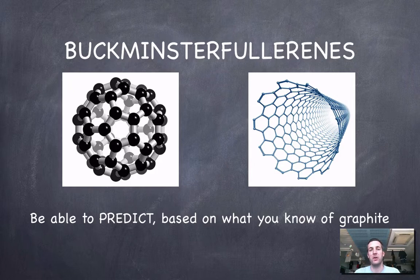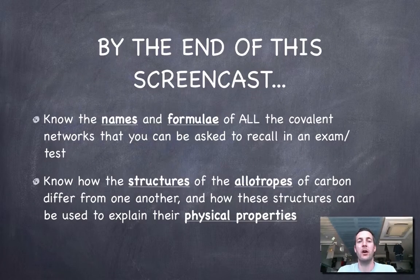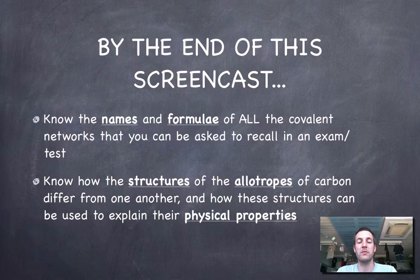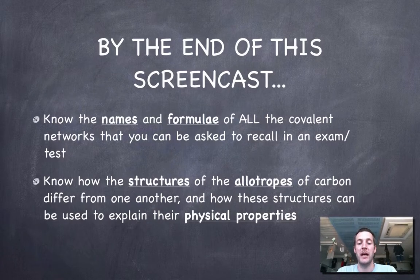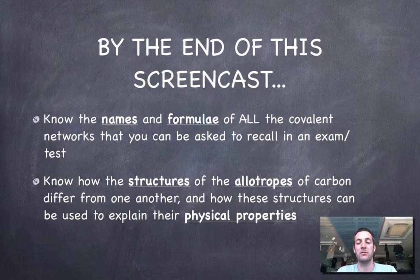Our aim at the start of this film was to try and know the names and formulae of all the covalent networks that we need to remember - there's only five of them, make sure you learn them - and to know how the structures of the allotropes of carbon, so that's different structural forms of carbon, can be used to explain the properties of graphite and diamond and buckminsterfullerenes.